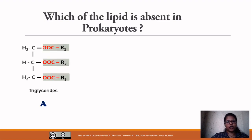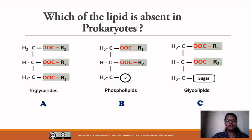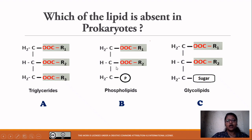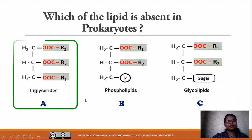Question number two: Which lipid is absent in prokaryotes? We discussed that in complex lipids there are three types: neutral lipids (triglycerides — three fatty acids esterified to glycerol), phospholipids (two fatty acids esterified to glycerol plus a phosphate group), and glycolipids (two fatty acids esterified to glycerol plus a sugar molecule). The correct answer is triglycerides, because neutral fats are not present in prokaryotes.